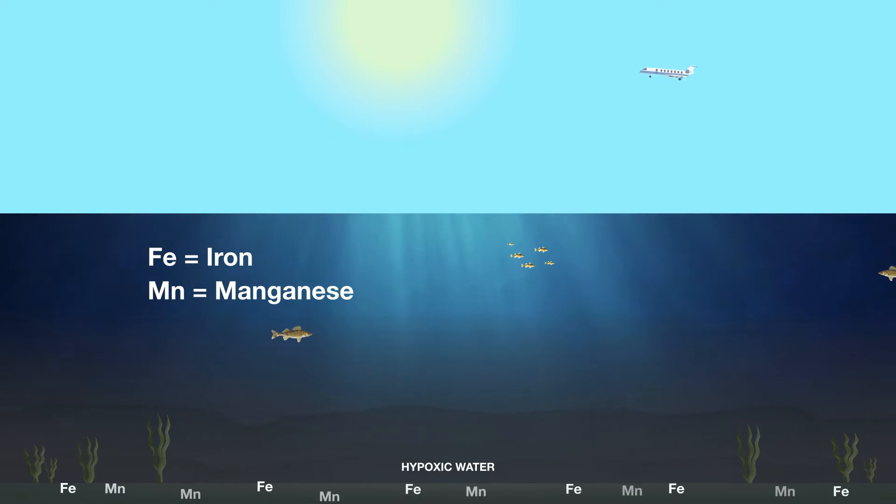The hypoxic water then pulls naturally occurring metals, particularly iron and manganese, from the lake bed.